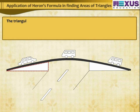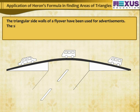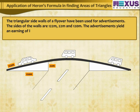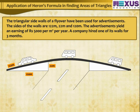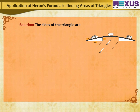The triangular side walls of a flyover have been used for advertisements. The sides of the walls are 122m, 22m, and 120m. The advertisements yield an earning of Rs. 5,000 per m² per year. A company hired one of its walls for 3 months. How much rent did it pay? Solution: The sides of the triangle are A = 122m, B = 22m, and C = 120m.